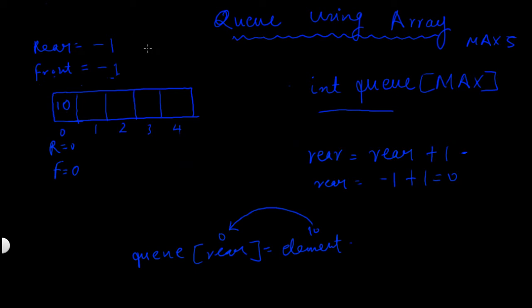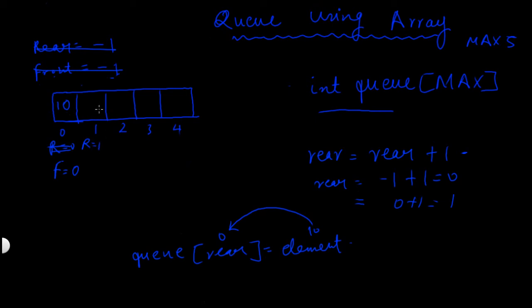In other words, when the value of front is equal to minus 1 and we insert a new element into the queue, the value of front becomes equal to 0. Now inserting another element: the value of rear is incremented by 1. The value of rear at this point is 0, so 0 plus 1 equals 1. Rear becomes 1, and suppose the value of element is 100, so 100 gets inserted at position 1.